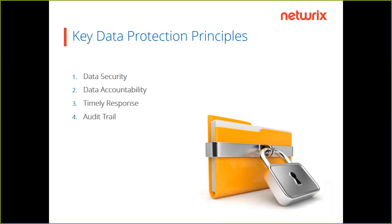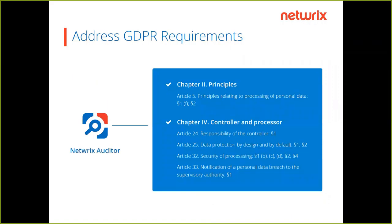The data accountability principle seeks to guarantee the enforcement of the data protection principles — the controller must demonstrate all necessary controls are in place. You should be able to say who's doing what and why and quickly get an overall picture of the current systems and processes state. A timely response is the ability to react quickly and even foresee things. If a breach still occurs, controllers must notify affected data subjects and the supervisory authority of such breaches in a short period of time. And an audit trail is required for getting comprehensive, accurate documentation of your systems.